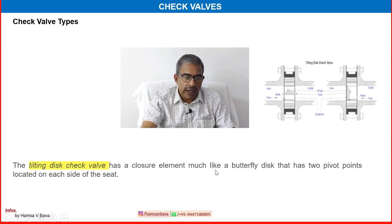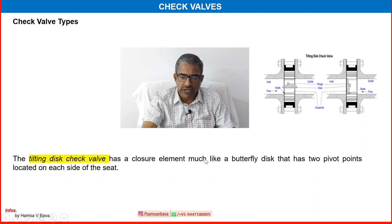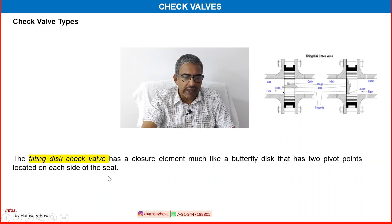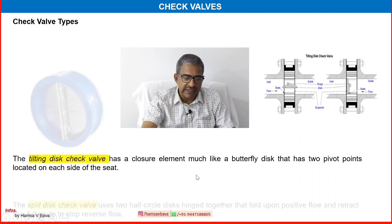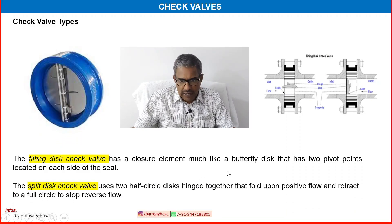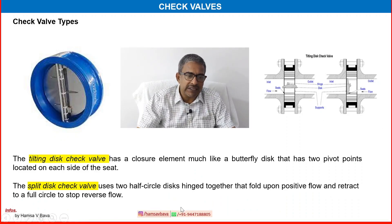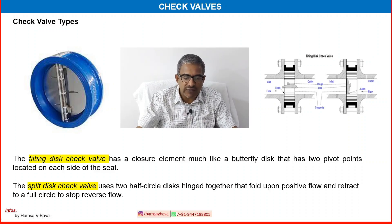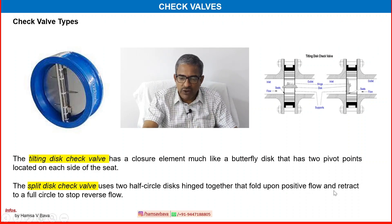Two more types exist. Tilting disk check valve has a closure element — much like a butterfly disk — that has two pivot points located on each side of the seat. It tilts to open and close. Another version is the split disk check valve, which opens like a door. Split disk check valve uses two half-circle discs hinged together that fold upon positive flow and retract to a full circle to stop reverse flow.